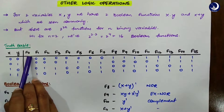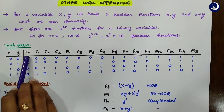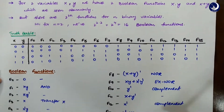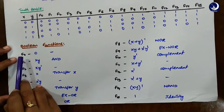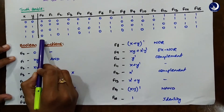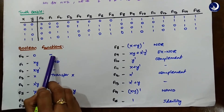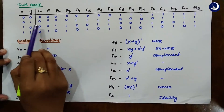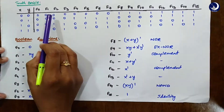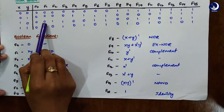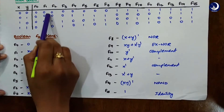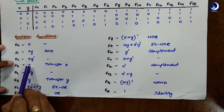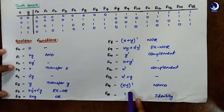Now, how do we calculate the boolean expression for f0, f1, f2, f3? For f0, all the values are 0, so it is simply 0 — it's a null function. For f1, if you carefully observe: 0·0 is 0, 0·1 is 0, 1·0 is 0, 1·1 is 1 — this clearly shows it is an AND gate, which is x·y. Similarly, for each function there is a particular pattern in how the boolean expression is derived.